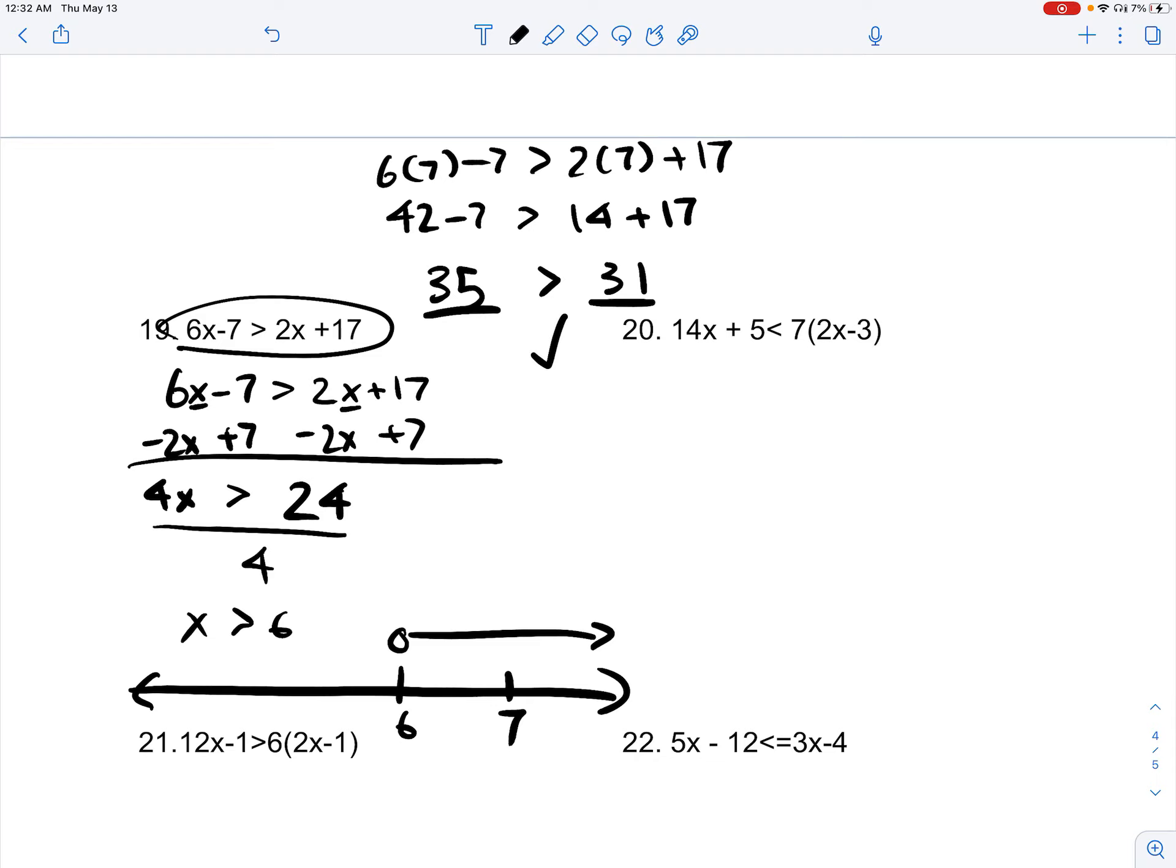What if it was less than 6? Let's try 0. If we input it into the inequality, we get 6 times 0 minus 7 is greater than 2 times 0 plus 17. That would give us negative 7 is greater than 17. Is negative 7 greater than 17? No.